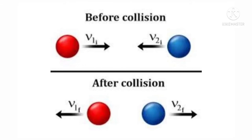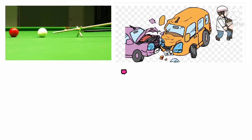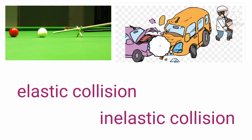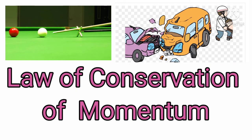In studying the momentum of two or more colliding objects, we will consider a closed system, or isolated system. It is considered a closed system if no one enters or leaves it — hence, no external force is exerted on it, such as resistance, friction, and the like. In a collision, whether it is elastic or inelastic, momentum is known to be conserved. This is because of the law of conservation of momentum.